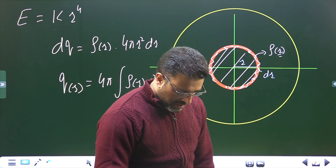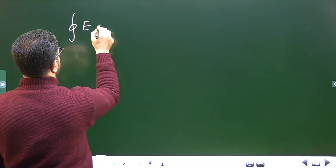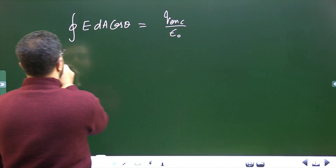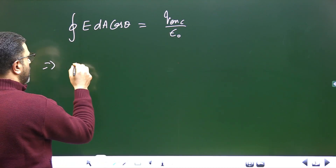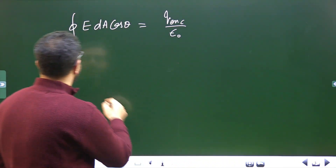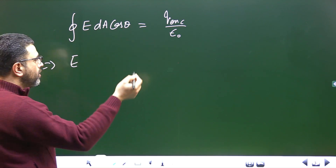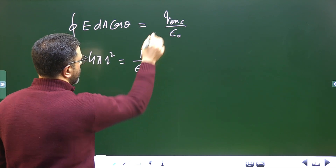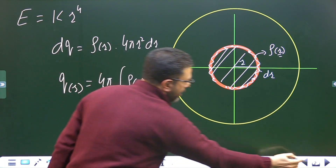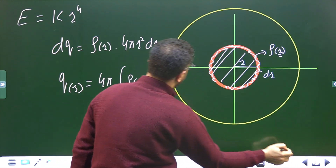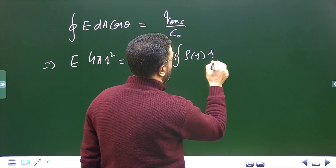Now I'll use Gauss's Law: ∮E·dA = Q_enclosed / ε₀. Since there is spherical symmetry, E is the same at all points on a spherical Gaussian surface, cosθ = 1, and ∫dA = 4πr². So we get: E · 4πr² = (1/ε₀) · 4π ∫ρ(r) r² dr.